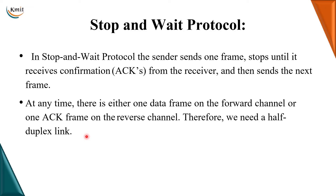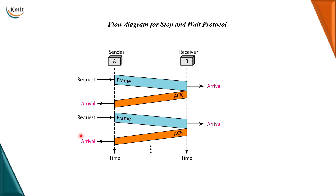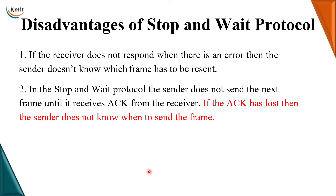At any time, on the forward channel we will be sending the frame and on the backward or reverse channel we will be receiving an acknowledgement — it is just like a half-duplex link. The sender sends a frame, waits for an acknowledgement to come from the receiver, and once the acknowledgement confirms the frame is received, it sends the next frame, and so on.